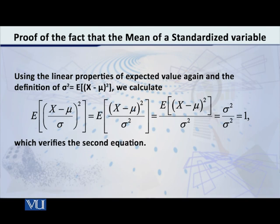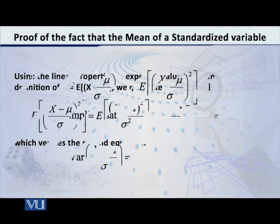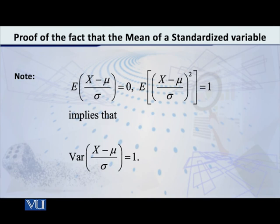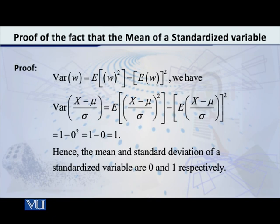Now, when these two things have been proved, it does not take long to prove that the variance of the standardized variable is equal to 1. So variance of (x minus mu) over sigma is equal to 1. Let us prove this using the shortcut formula. Let the variable be w, so variance of w is given by the expected value of w squared minus the expected value of w, whole square. Here, w is (x minus mu) over sigma.